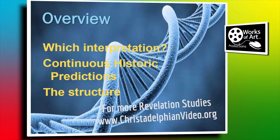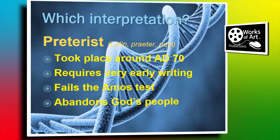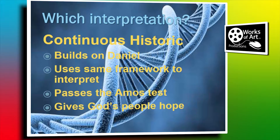Drawing out for each element what writers in the past have written about their understanding. So which interpretation? We're following the continuous historic interpretation here. Why? Because it builds on Daniel. It's harmonious with what Daniel says. It's using that same framework to give us the key we need to unlock the complexities of Revelation. If we look at Revelation and say this is a further interpretation of Daniel's fourth beast, because there are so many images that come across, then we know where to look. We know from Daniel's image the grand scheme of things - where we're supposed to start and where we're supposed to end. And knowing that, we can then piece together the jigsaw.